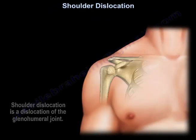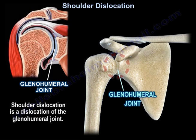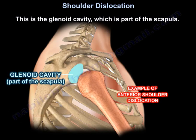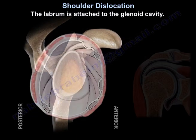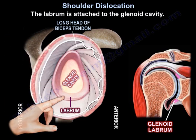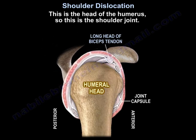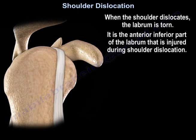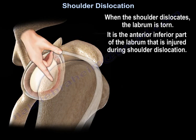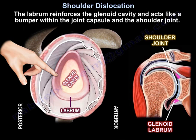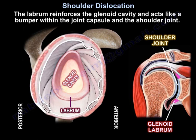Shoulder dislocation is a dislocation of the glenohumeral joint. This is the glenoid cavity, which is part of the scapula. The labrum is attached to the glenoid, and this is the head of the humerus — so this is the shoulder joint. When the shoulder dislocates, the labrum is torn; specifically, it is the anterior inferior part of the labrum that is injured. The labrum reinforces the glenoid cavity and acts like a bumper within the joint capsule and the shoulder joint.